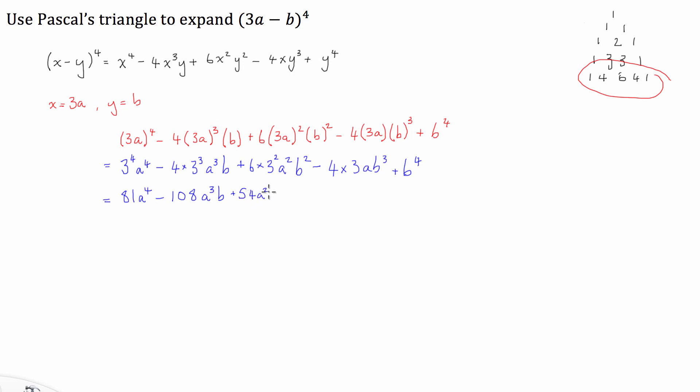3 squared is 9, 9 times 6 is 54a squared b squared minus 4 times 3 is 12ab cubed and finally plus b to the power of 4.